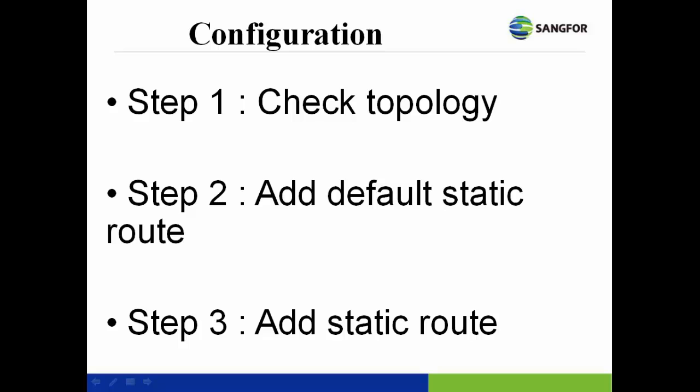In this demo, I will demonstrate the case where we need to configure a static route and how to configure it. First and foremost, we have to check the topology to analyze where we should put the static route or default static route. After this, configure the necessary routing settings according to the topology.